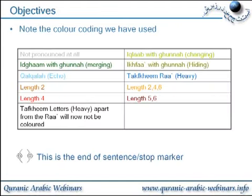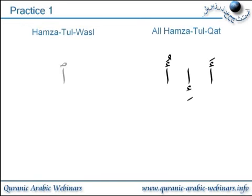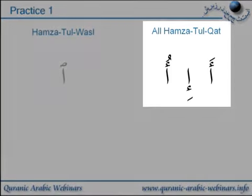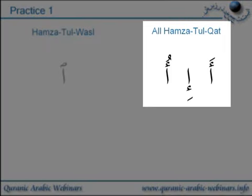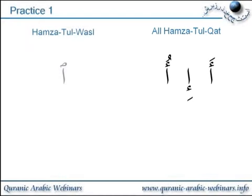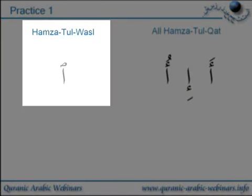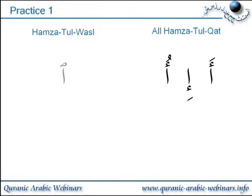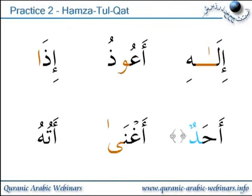The color coding we've implemented for this practice is shown here — you can stop the video and go through them. At the bottom left it shows the symbol we're going to use for the end of the sentence. Practice one: we have Hamzatul qat, i.e. just a quick reminder, that's when Hamza itself has its own sound. Then we have Hamzatul qat which doesn't actually have its own sound except when it will be pronounced as if it's got a fatha. We'll cover that in the practices. Practice two: we'll do a few examples of Hamzatul qat.